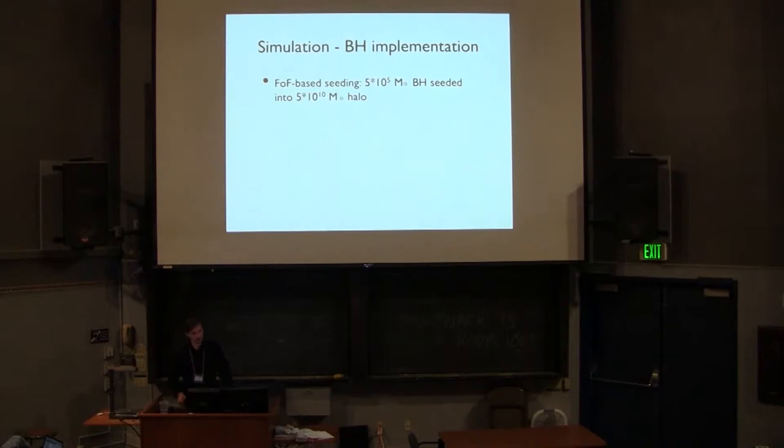So most significantly for this, I'll just cover the black hole implementation. Seeding of black holes is accomplished with a very simple Friends of Friends finder, which runs on the fly, and anytime we have a halo above 5 times 10 to the 10th solar masses, if there isn't already a black hole there, we seed one with 5 times 10 to the 5th solar mass seed mass. And that should be generally consistent with either of the commonly considered seeding mechanisms from either POP3 stars or direct collapse.